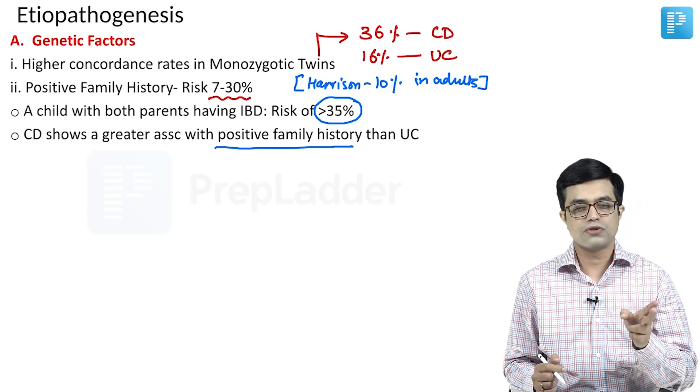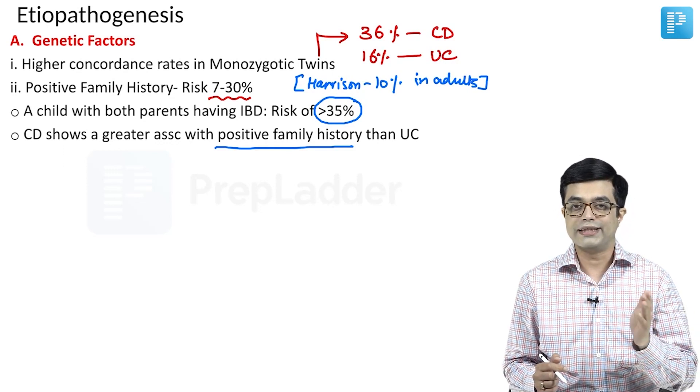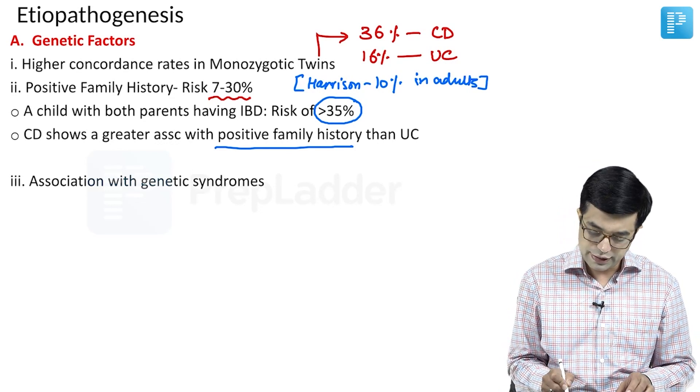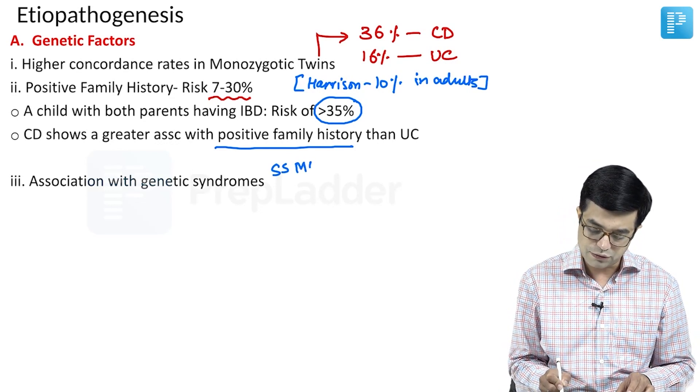So, twin also, family history also, Crohn's disease will be more common than ulcerative colitis. Then there is an association with genetic syndromes. Already super specialty MCQ on this has been asked.